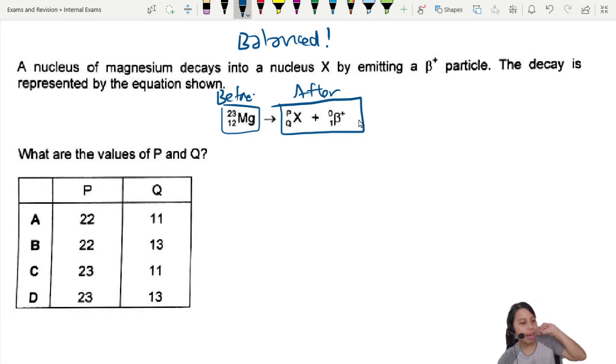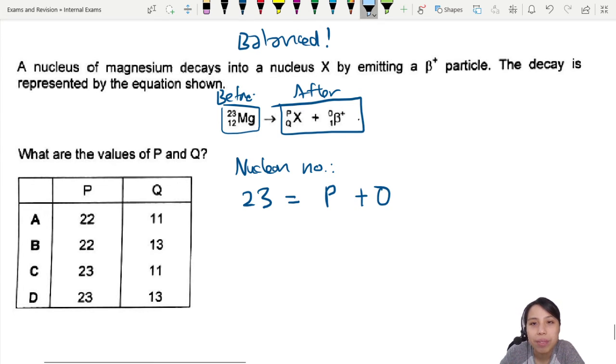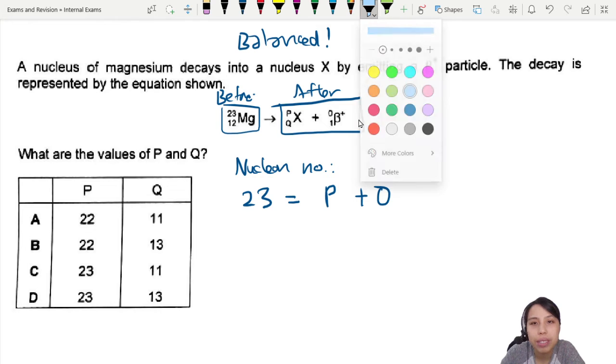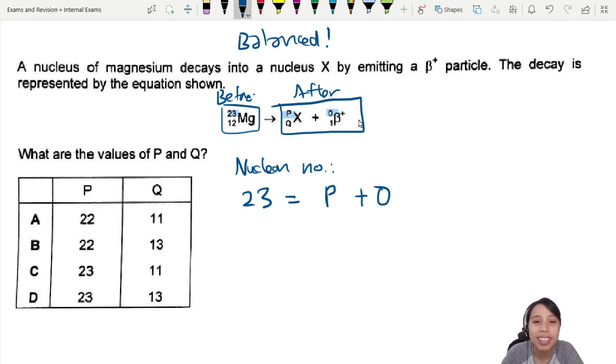So let us balance the nuclear number first. Nuclear number before is 23. After is, I don't know, P plus 0. So I am just looking at all these values here: 23, P and 0. So what is P? No change, P should be 23. 23, no change in nuclear number.